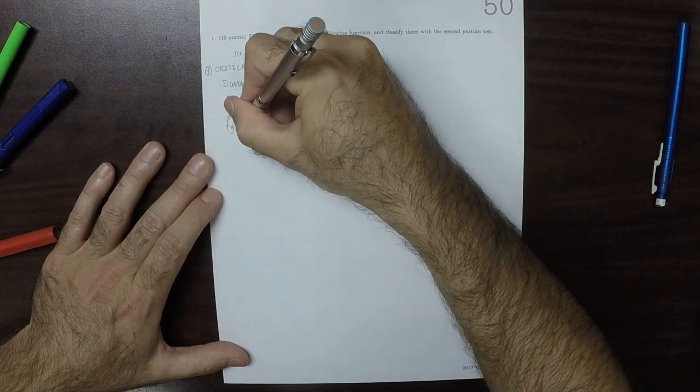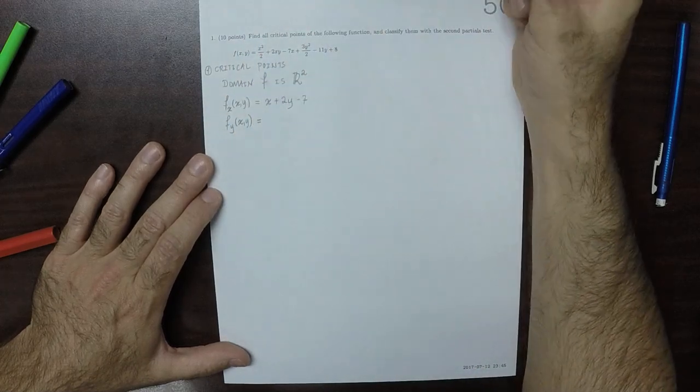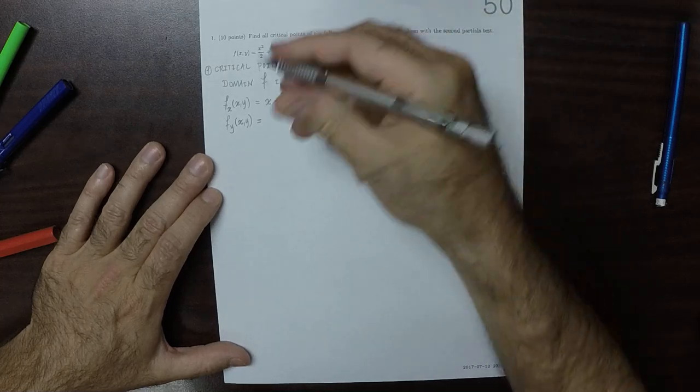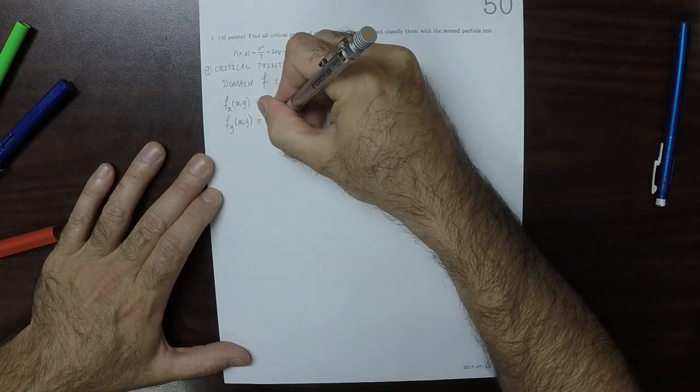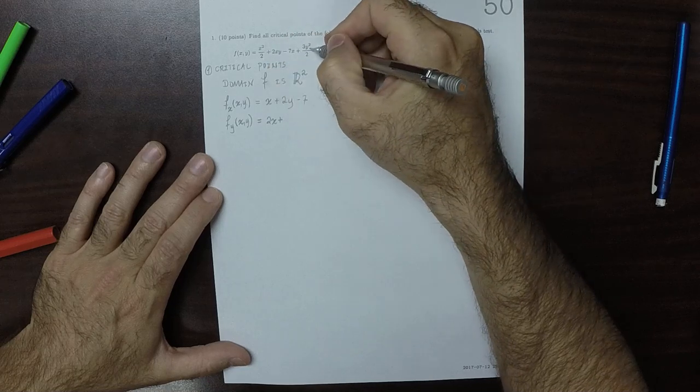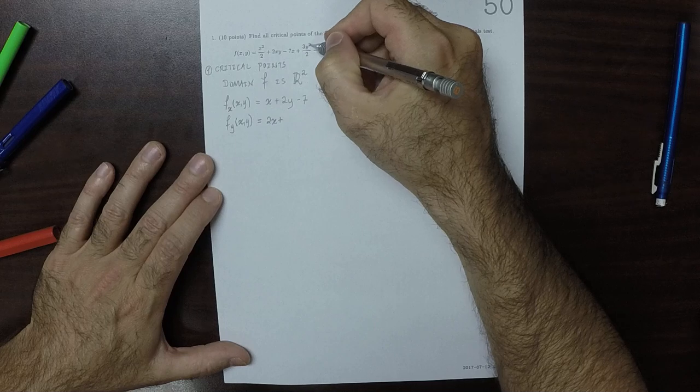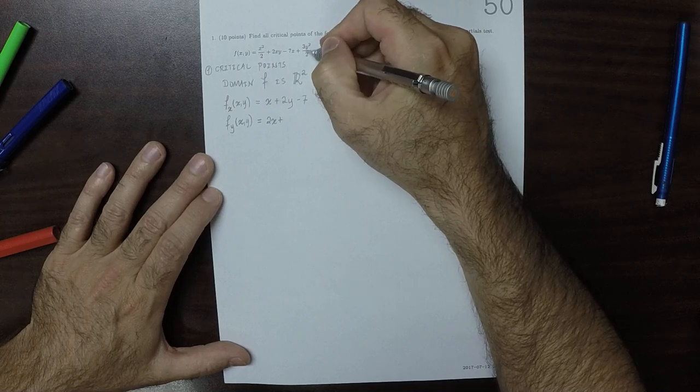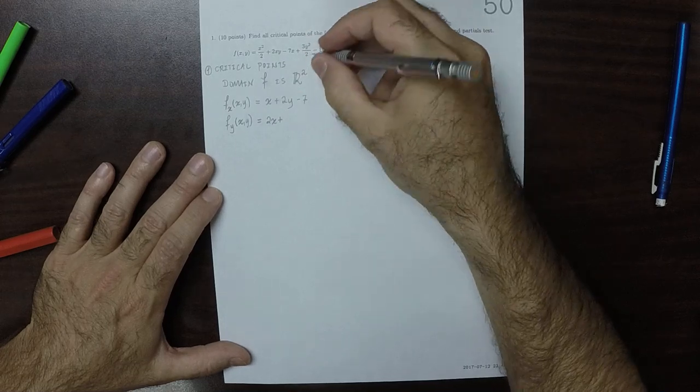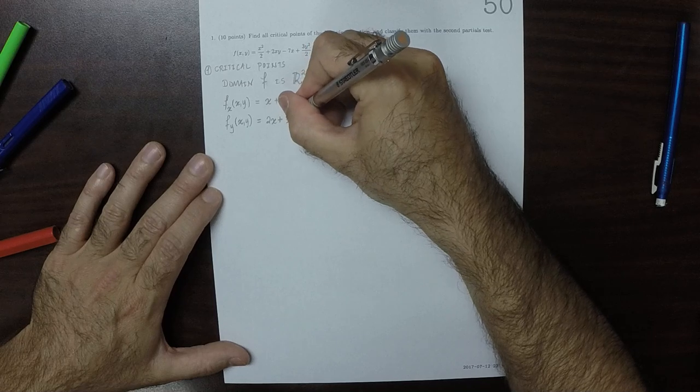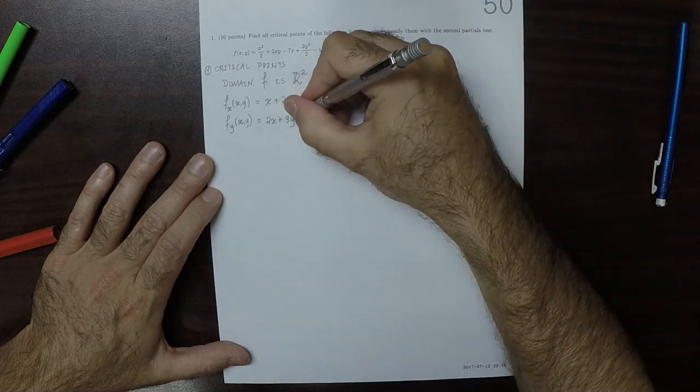The y partial: that would be 2x. The derivative of y squared over 2 is just y, and then that 3 is hanging out, so plus 3y, and then minus 11.